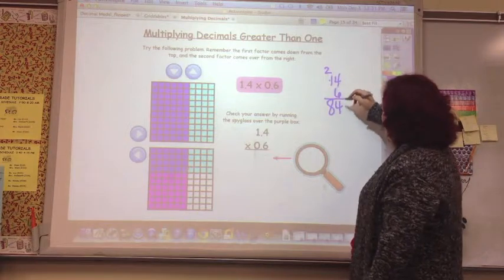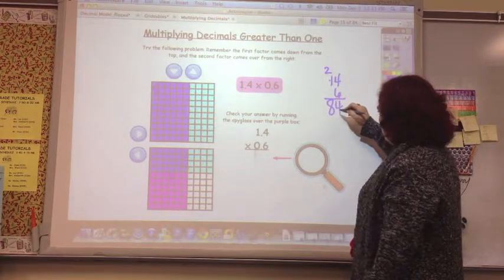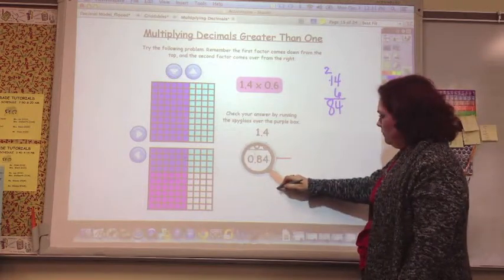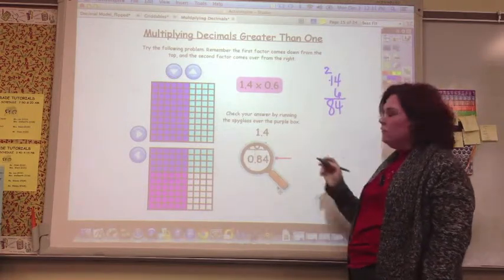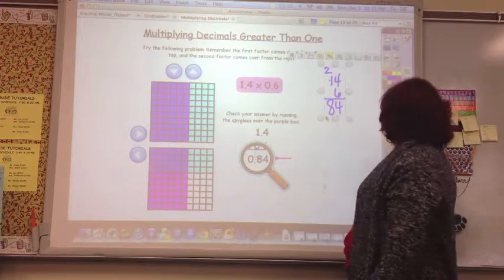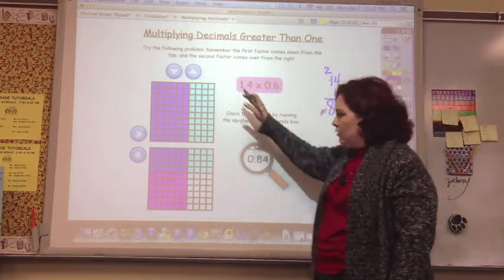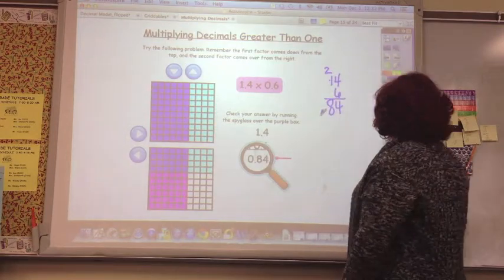Oh, no, let's see... 84 hundredths, 84 hundredths. So that decimal point would go there. And that shows 84 of them shaded.